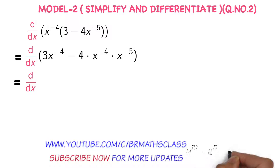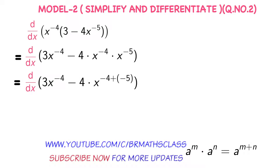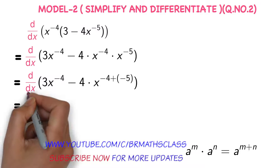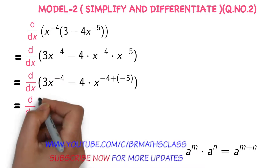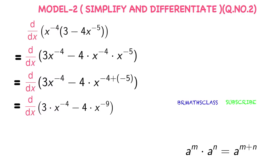We know this formula: a power m into a power n equals a power m plus n. So this is 3 into x power minus 4 minus 4 into — applying this formula a power m into a power n — x power minus 4 plus minus 5. Derivative of 3 into x power minus 4 minus 4 into x power minus 9, so I write x power minus 9.